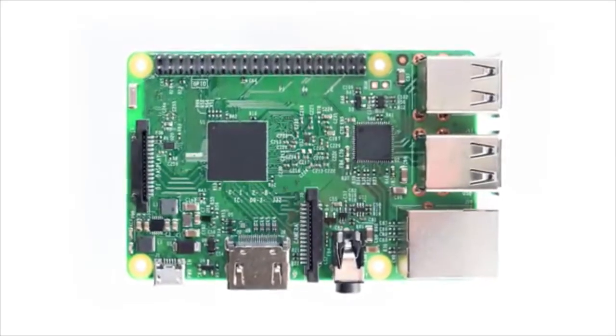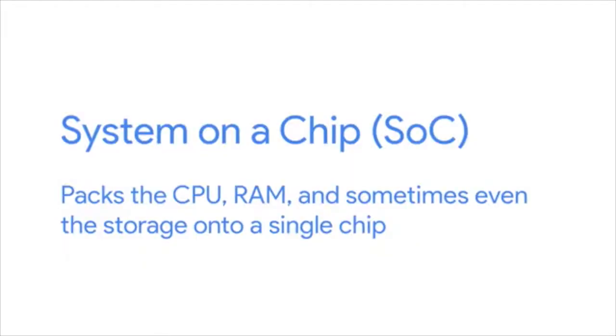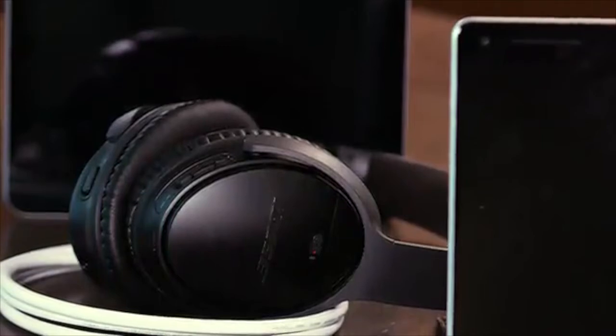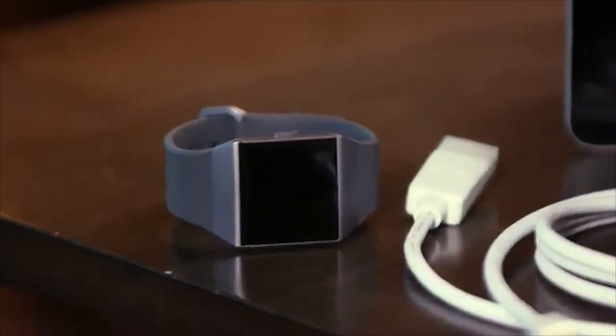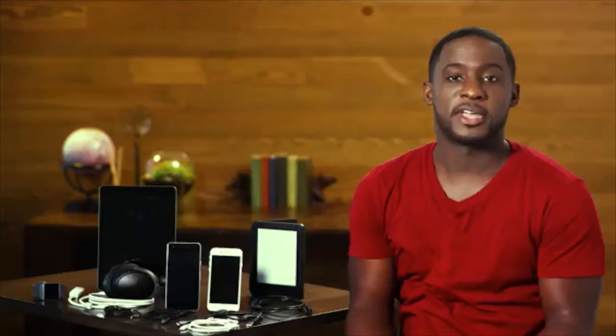Mobile devices are usually very integrated. While desktop components can be taken out and held in your hand, mobile devices build some or all of these components together in a way you can't take apart. The smaller the device, the more integrated the components usually are. Very small mobile devices use a system on a chip, or SoC, which packs the CPU, RAM, and sometimes even storage onto a single chip. SoCs are small and use less battery power than if those components were separated. Even small mobile devices use peripherals — a fitness tracker is a standalone device, but it can also be a peripheral to your smartphone.